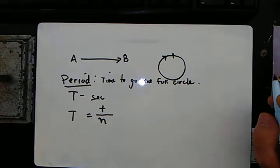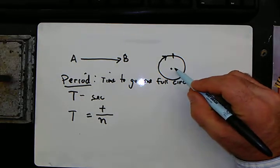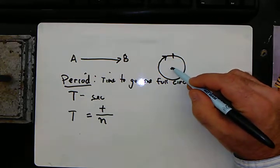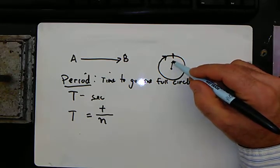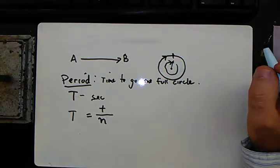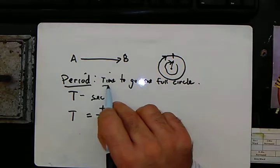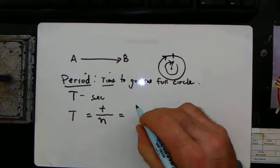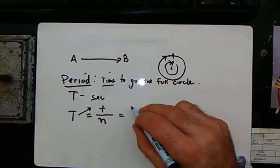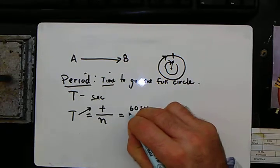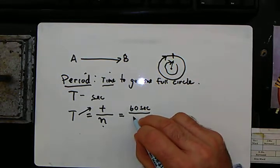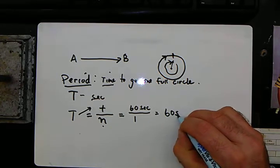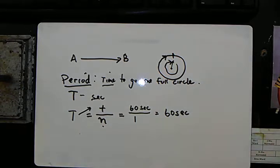The first question I have for you is, if you have a clock, what is the period of the second hand? The second hand starts at 12 and goes all the way around. We said the period is the time to go one full circle. It would take 60 seconds to go around one full time, so the period ends up being 60 seconds.